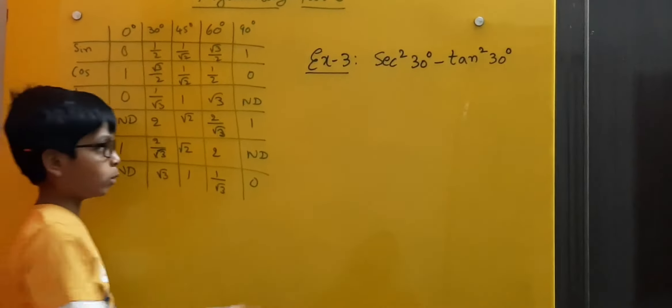Equal to, here this square is applicable to both numerator and denominator. So we write 4 by root 3 square is root 9 which is 3. Minus, here 1 square is 1, so we write 1 by root 3 square is root 9 which is 3.